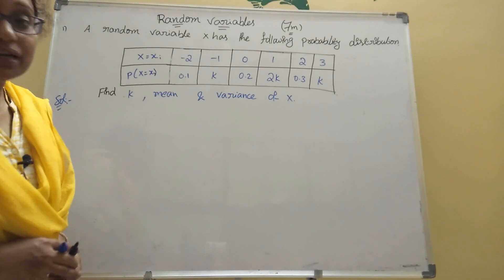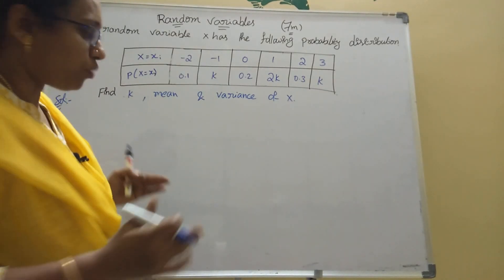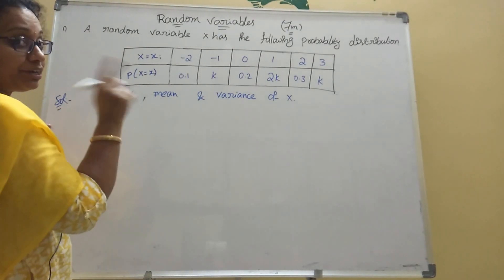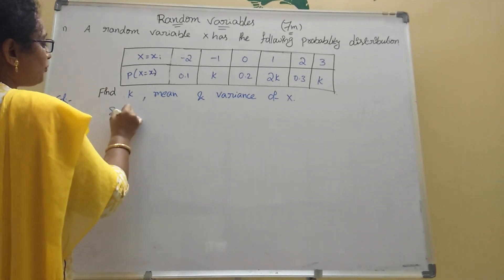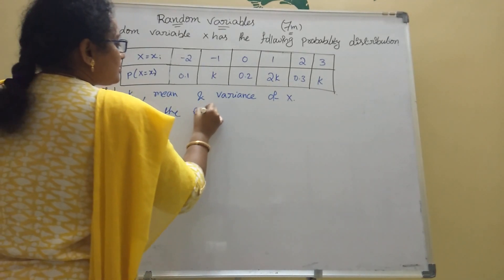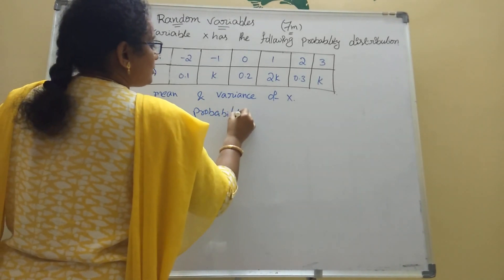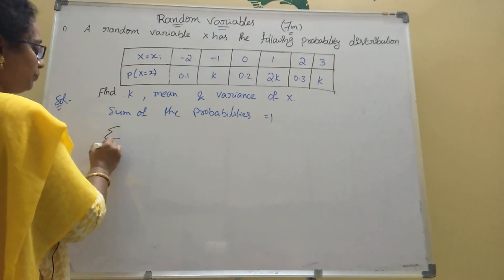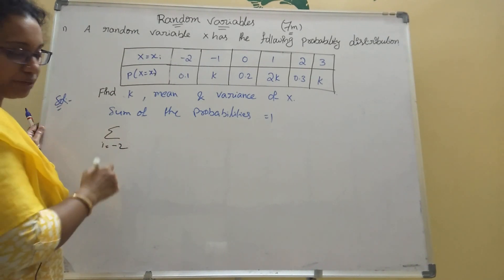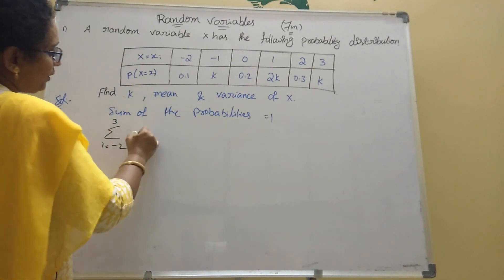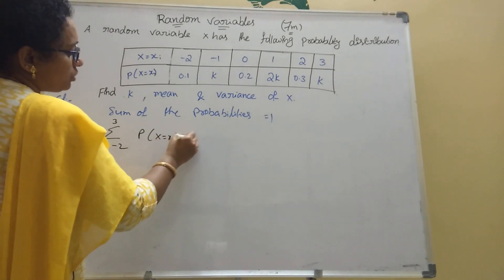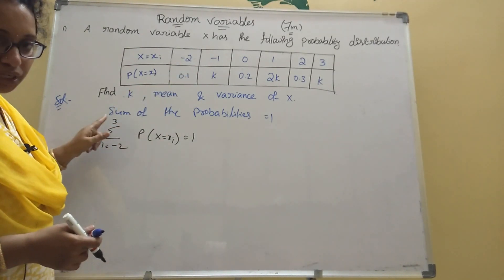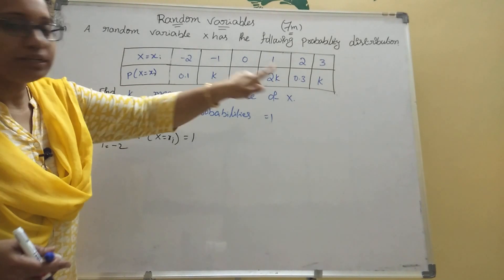Using sigma from minus 2 to 3 of p(x equal to xi) equals one. The given probabilities are: 0.1, k, 0.2, 2k, 2k, k. Adding them all and setting equal to 1.